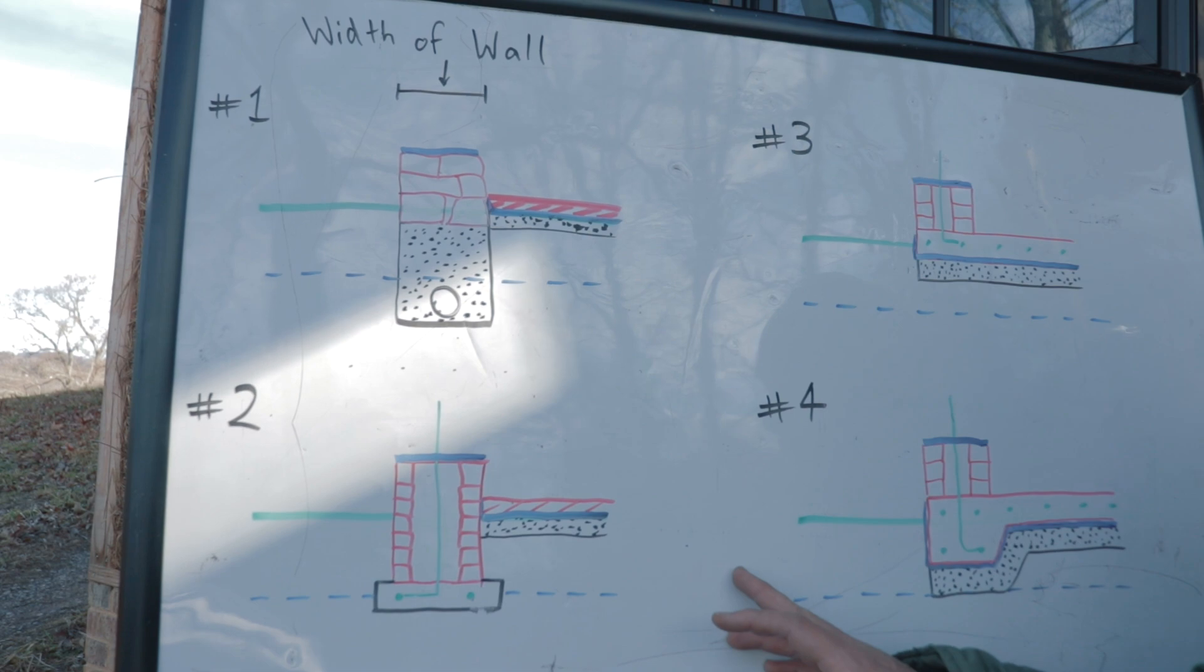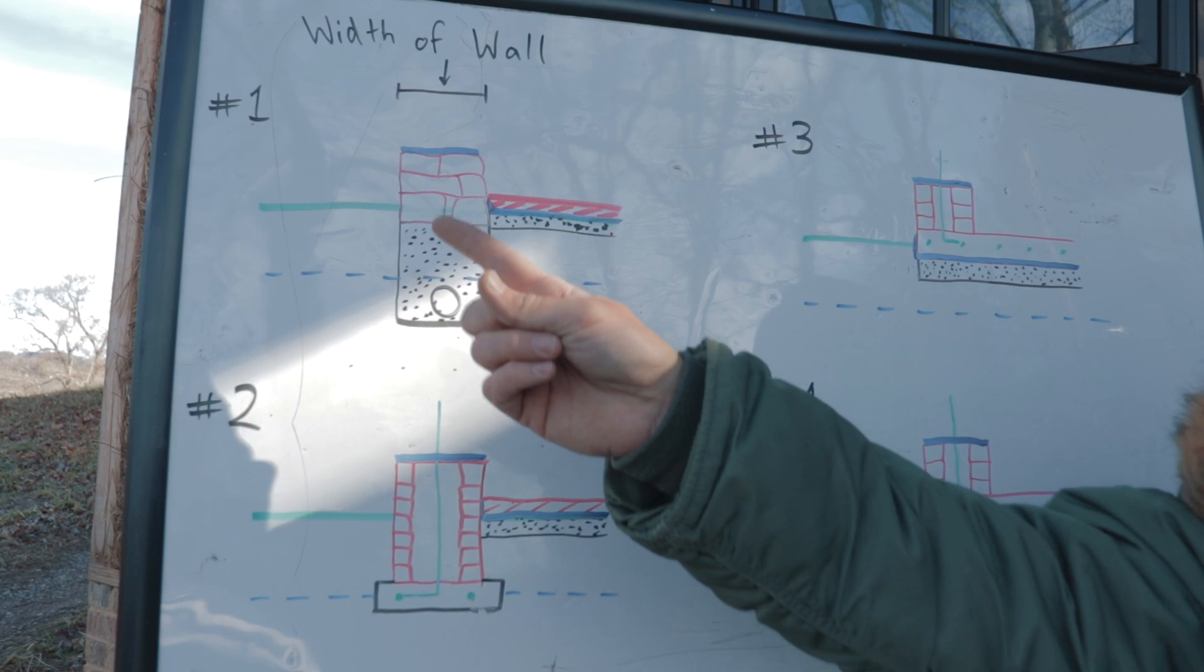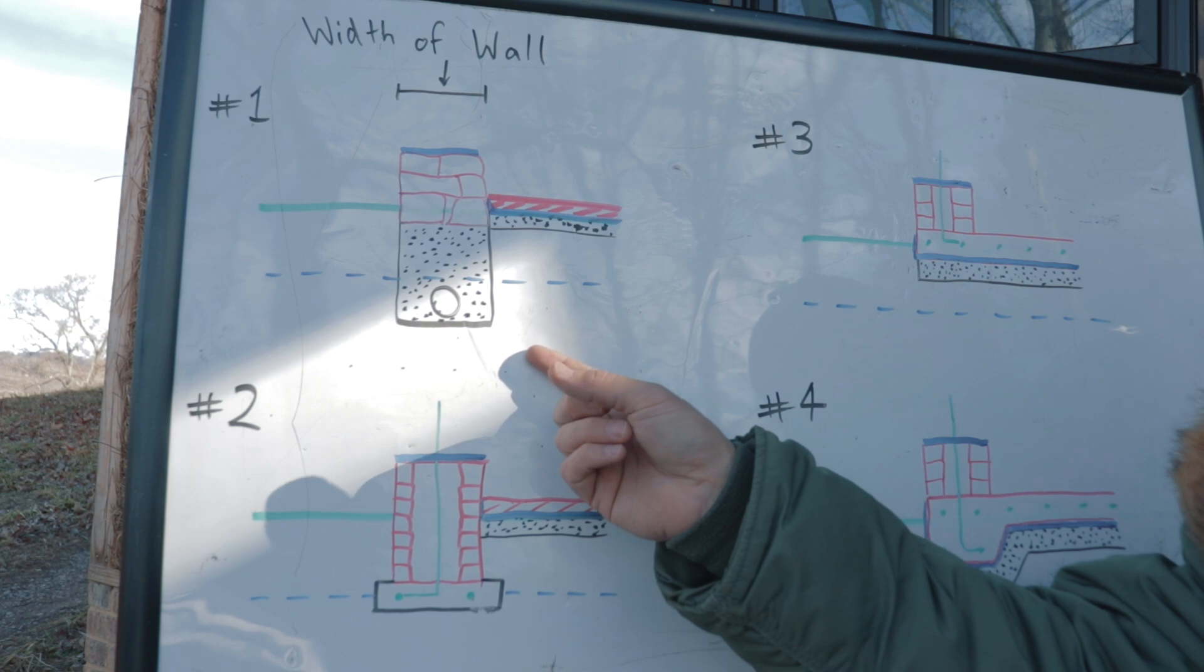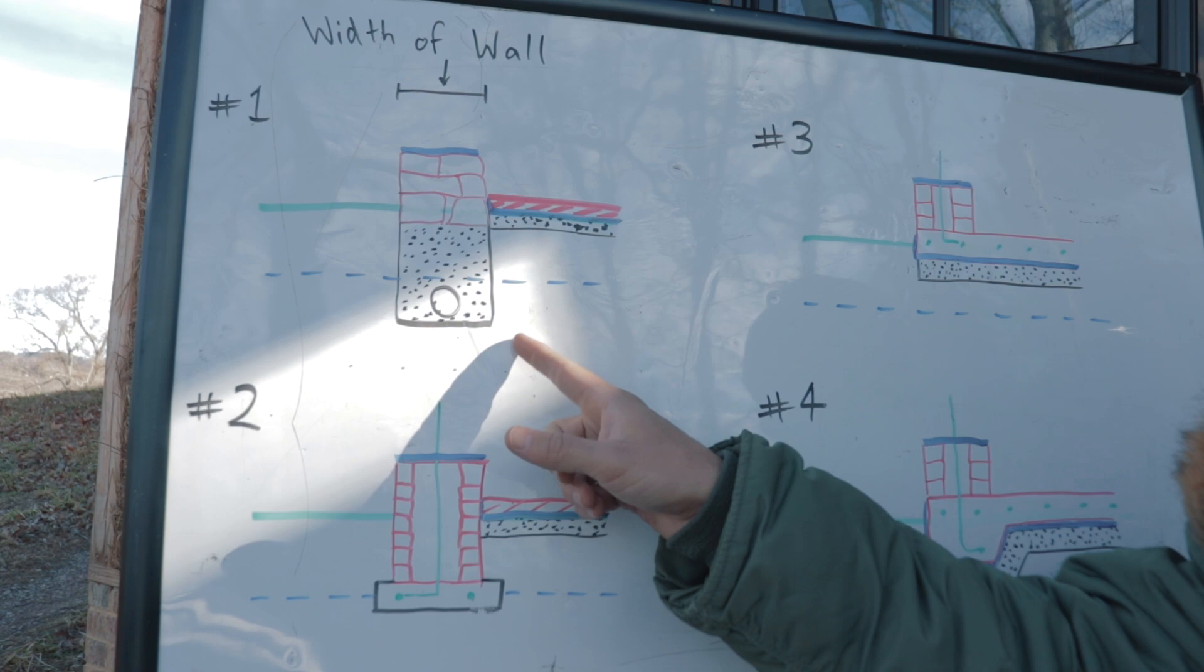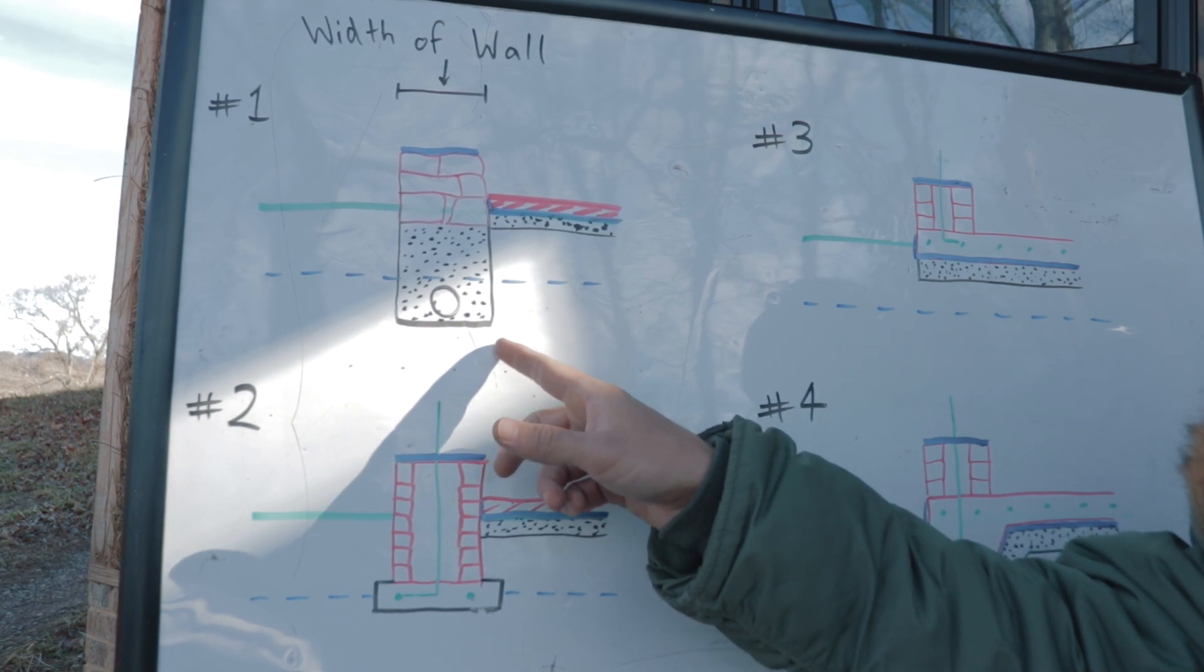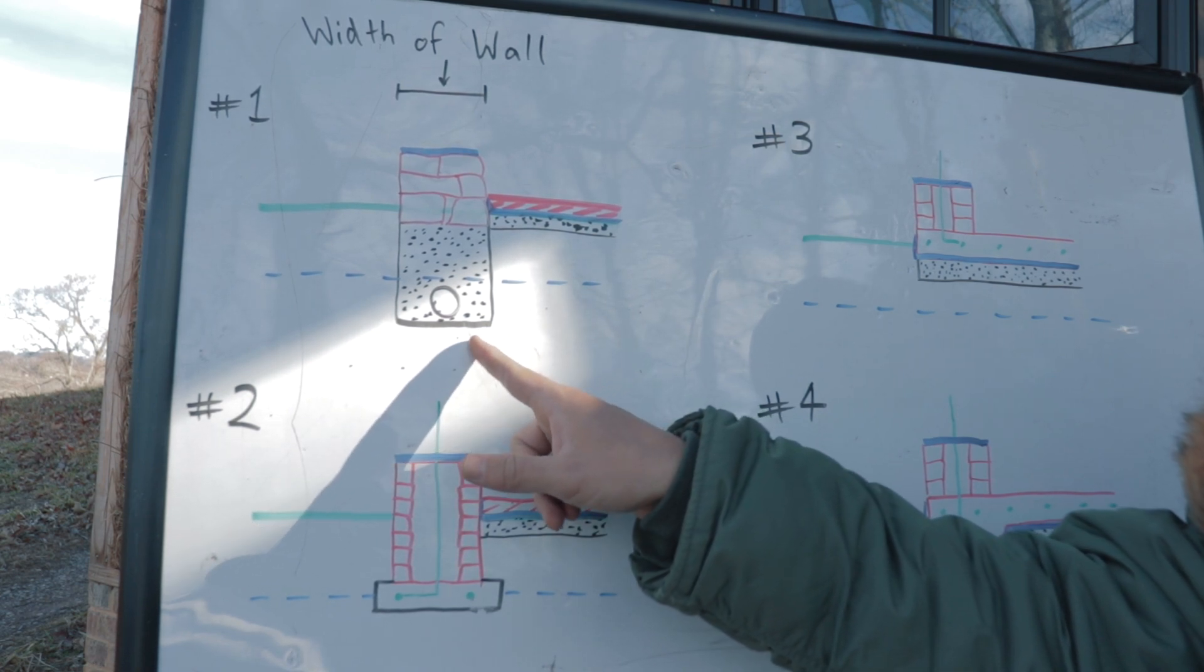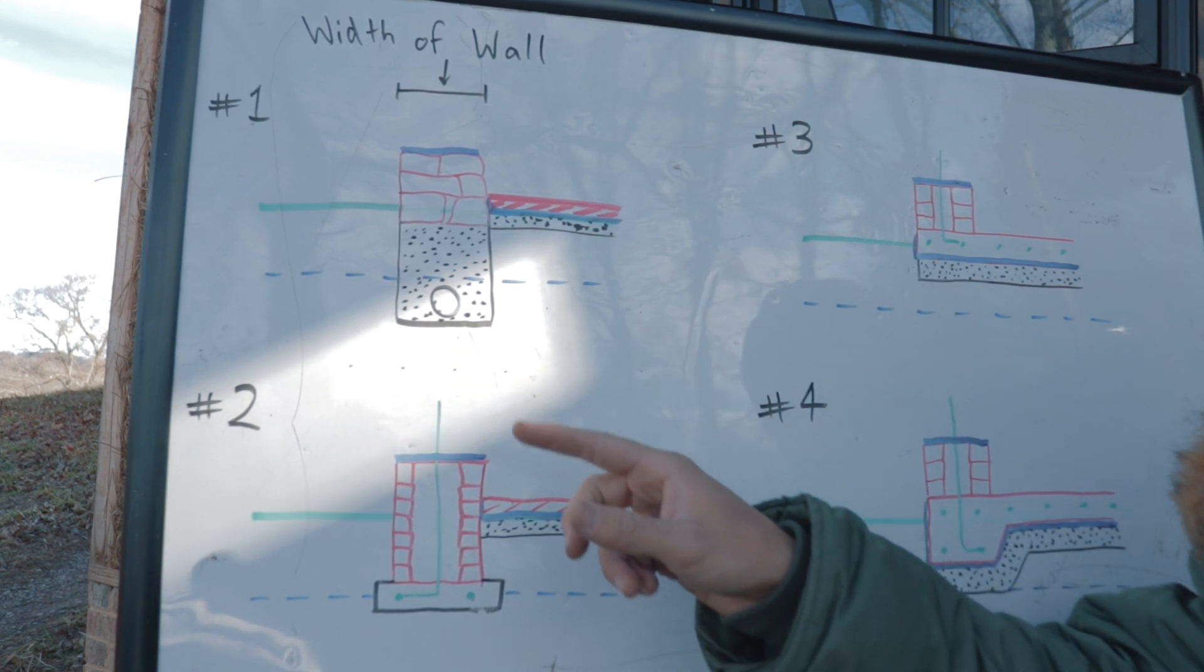On the board here, I have four examples of different foundation styles. This first one, this is a rubble trench foundation, number one. This is what you see a lot with cob buildings. And this is what you get taught most of the time, I'd say probably 90% of the time, at a so-called cob workshop. You're going to learn the rubble trench foundation system. The rubble trench foundation system is the most rudimentary basic way, out of all these at least, to build a foundation.